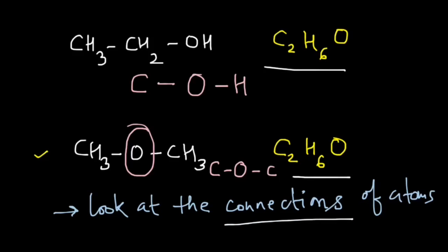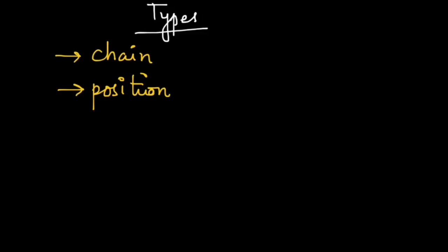Now let's look at the types of structural isomers. There are different criteria on the basis of which we can identify the structures and connections. We have the chain isomers, the position isomers, then we have metamerism.